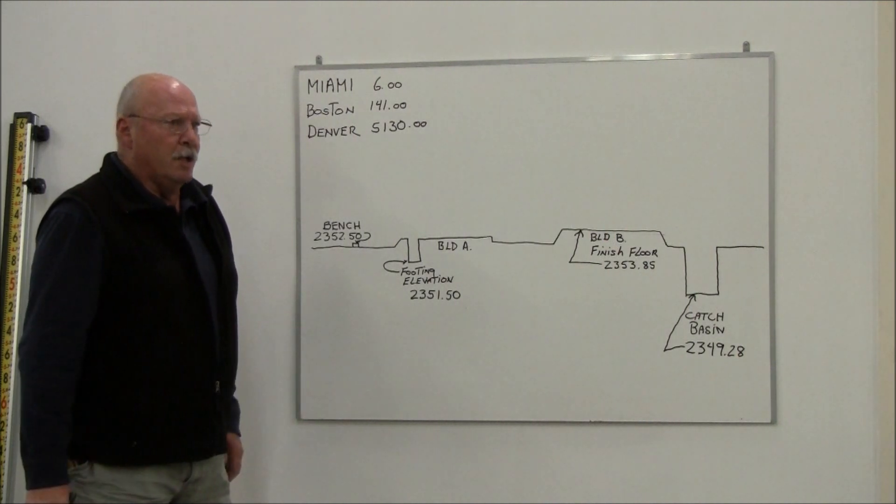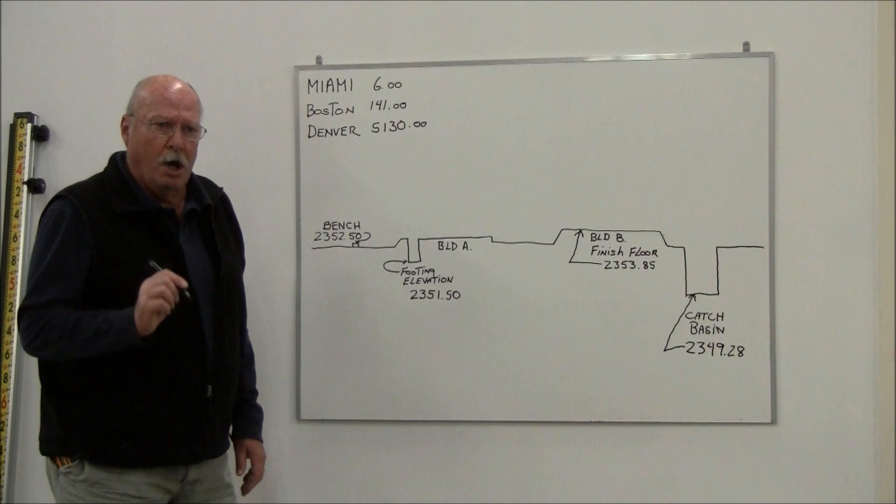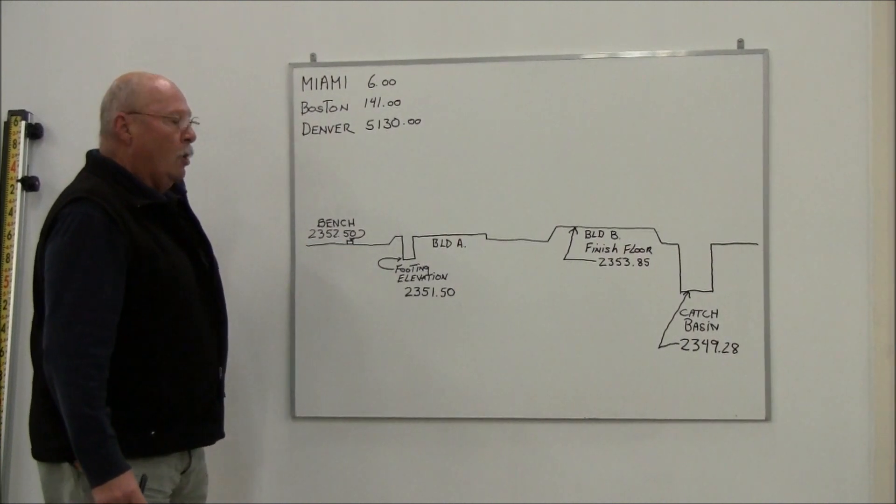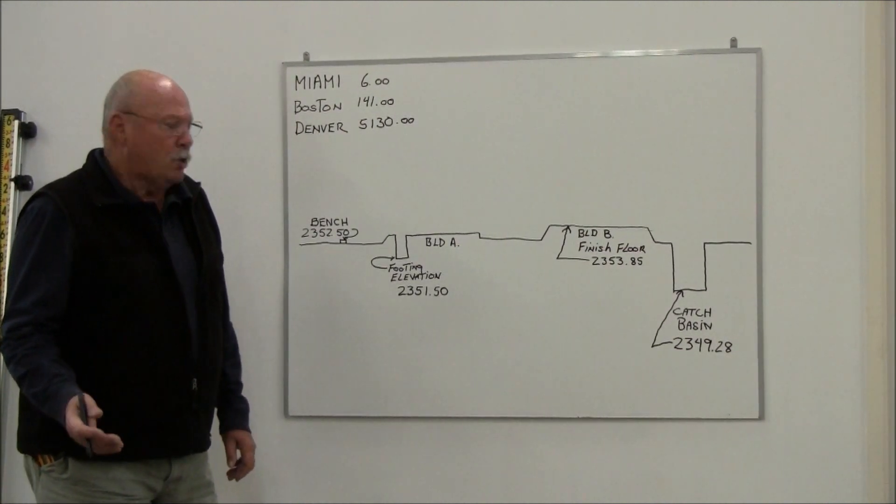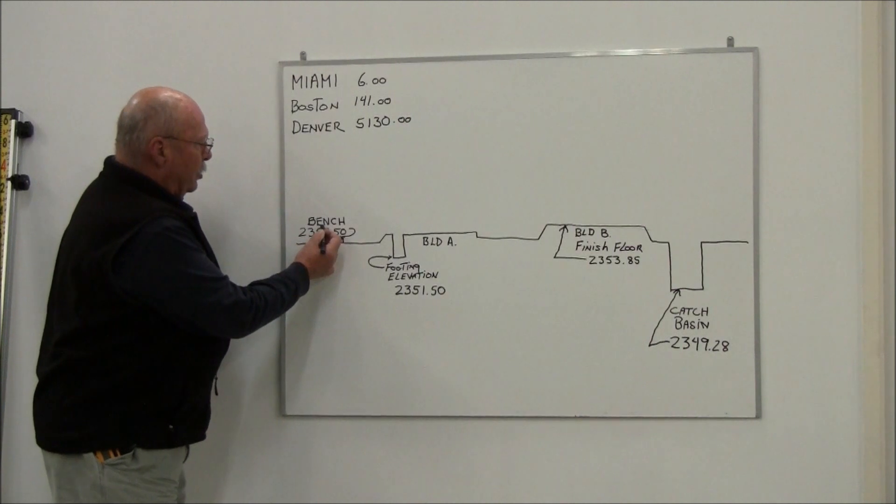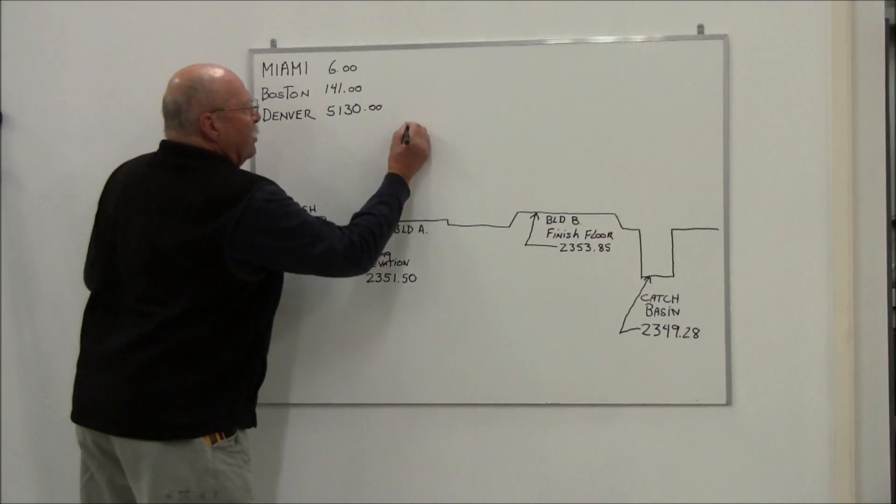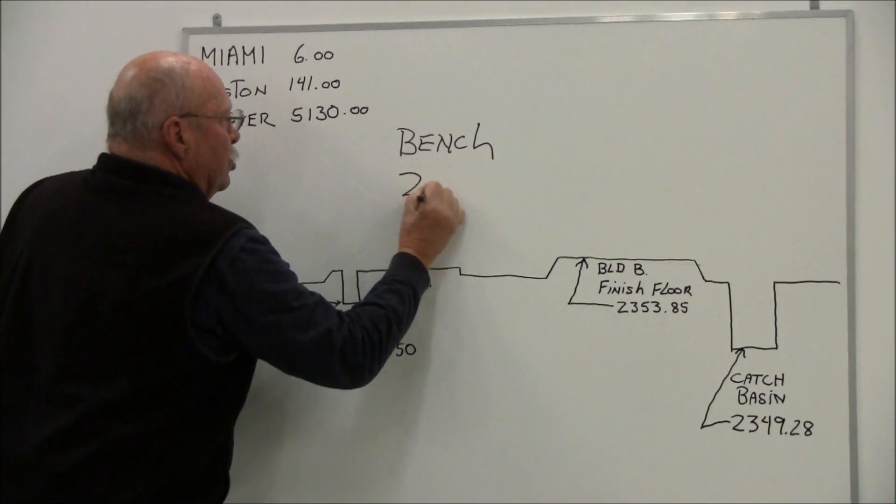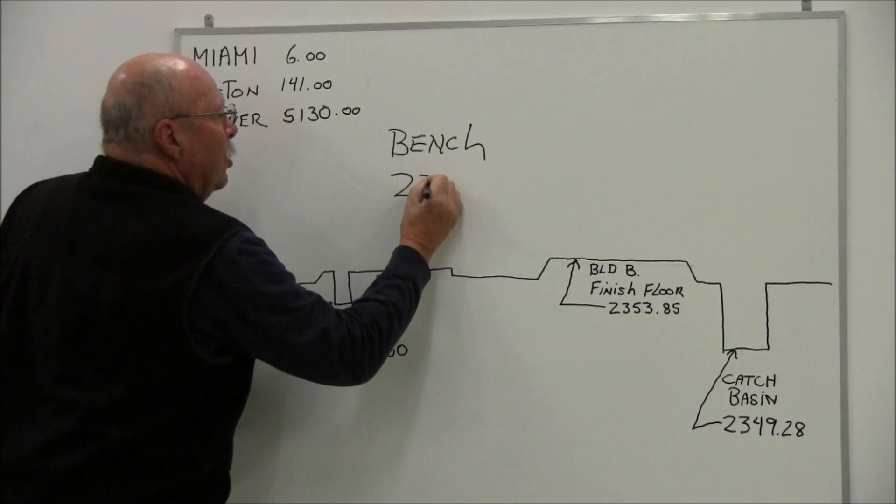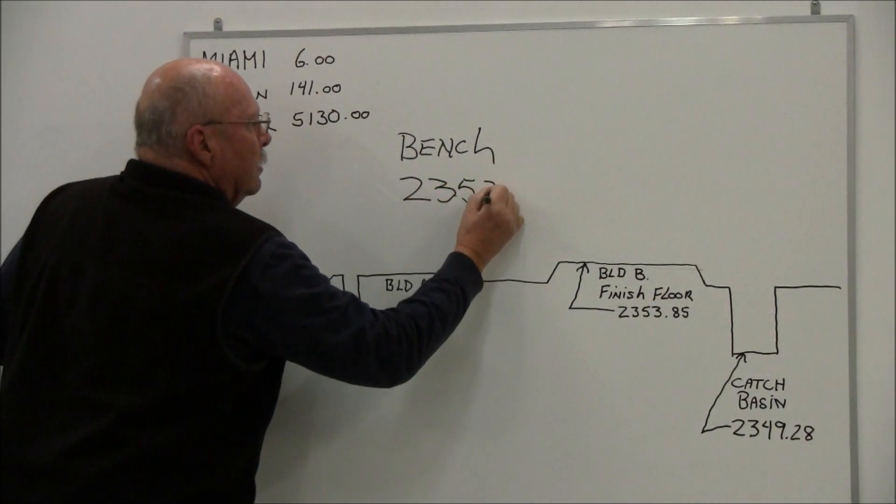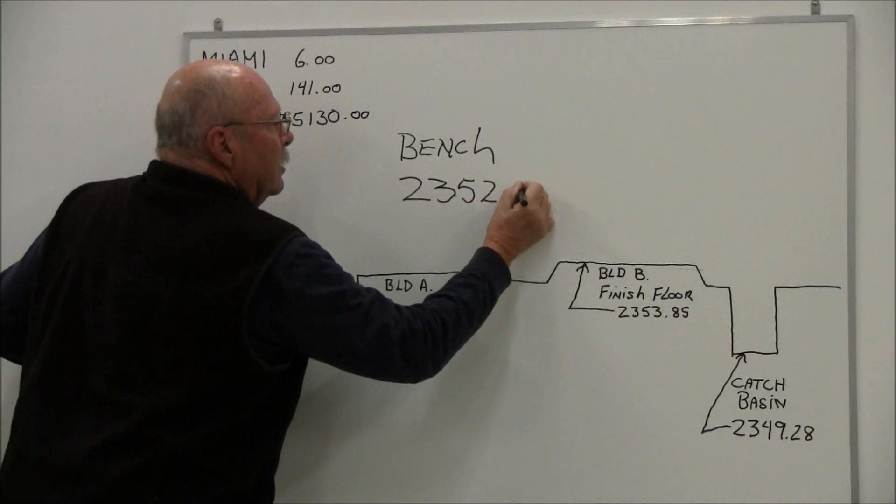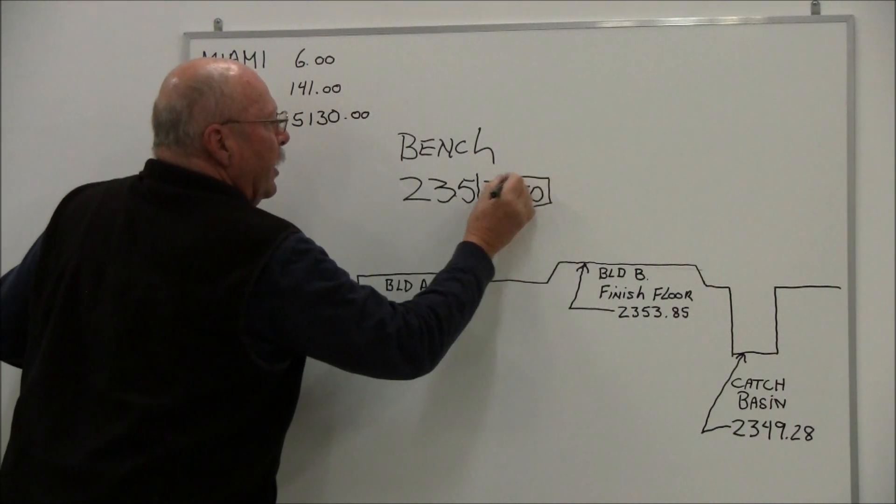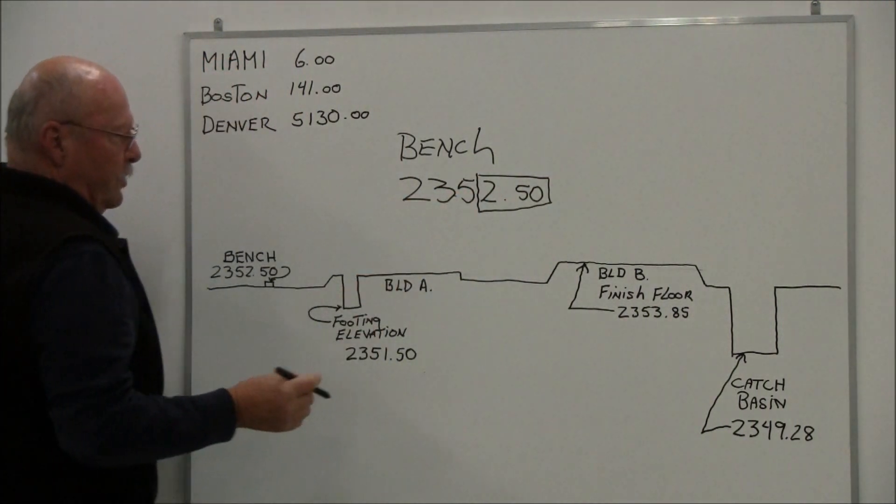For purposes of conversation today, we're going to say that our benchmark elevation on this job is 2352.50. The grade rod is obviously not 2,000 feet high, so what we're going to use is the whole number and the last two digits. So I've got a bench on this job of 2,352 feet and 50 hundredths. What we're really going to be looking at is 250 on our grade rod, which is going to represent 2352.50.